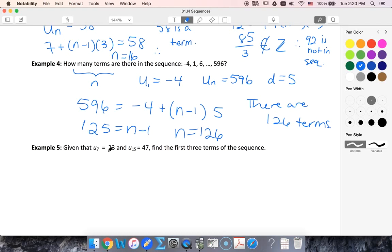So if I know that the seventh term is 23, that means that 23 is equal to the first term plus six times the common difference. The fifteenth term being 47, I'll get U1 plus 14D.